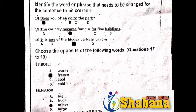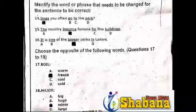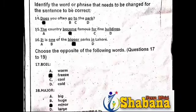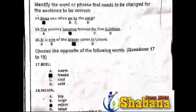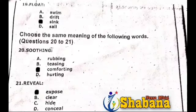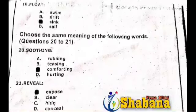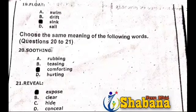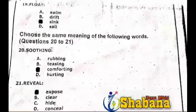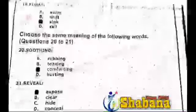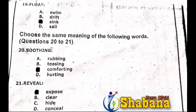The second word is 'major'. There are four options: big, huge, minor, and large. The opposite of 'major' is 'minor' — this is very common. Then the third word is 'float'. The four options are: swim, drink, sink, and sail. The opposite of 'float' is 'sink', which is option number C.